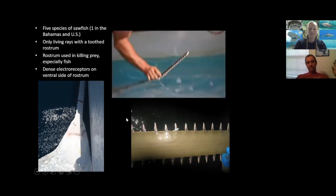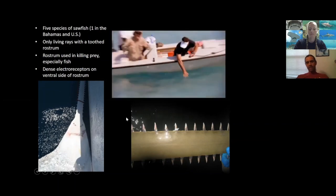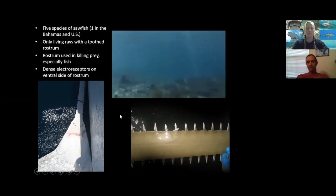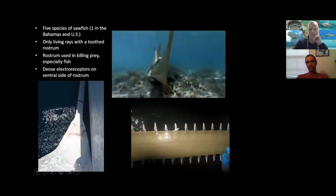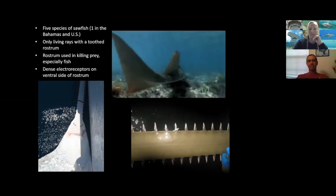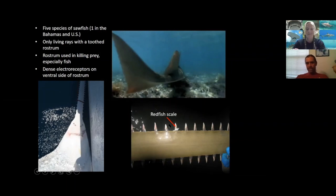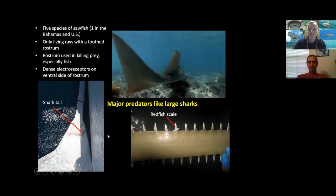Underneath the rostrum there are receptors that detect very minute electrical fields. Every living creature produces a weak bioelectrical field — you do right now sitting wherever you are. That electrical field can be detected by the rostrum like a big metal detector, allowing sawfish to find prey on the bottom. These are major predators: we've found a red drum scale sitting on a rostrum tooth, a sharp-nosed shark's tail hanging out of a sawfish mouth — they swallowed an entire three-foot-long shark.